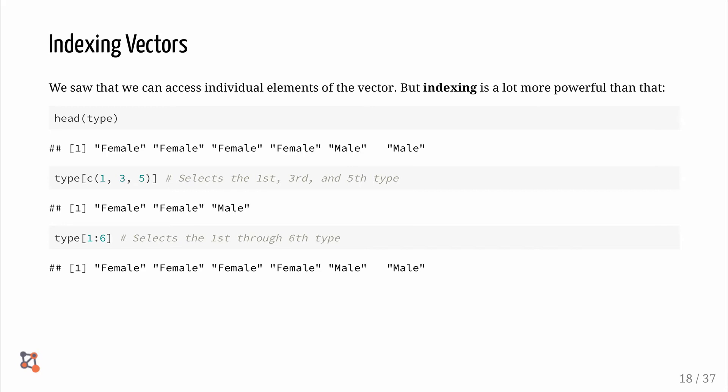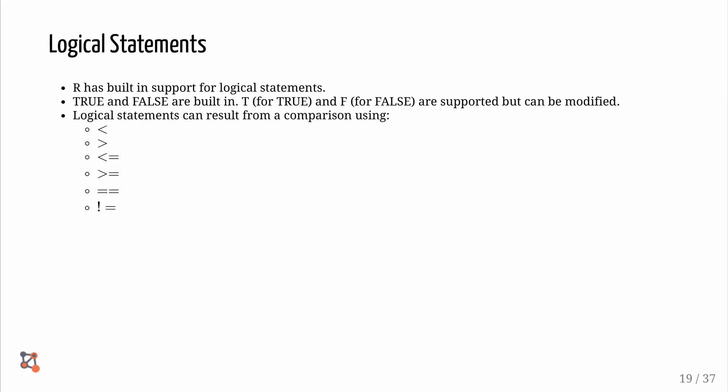We can use head to get the first six rows of the type column. Then we can use the C function to get the first, third, and fifth rows in the type column. Finally, we can use the colon operator to find the first through six rows in the type column.